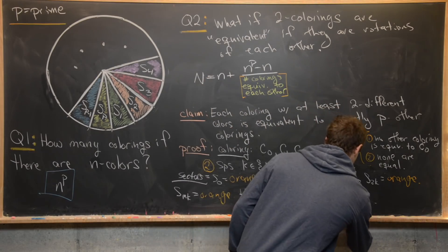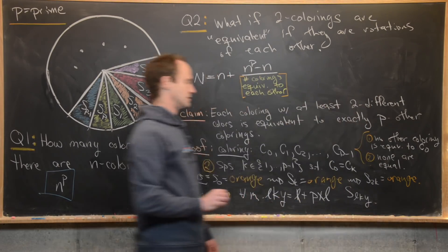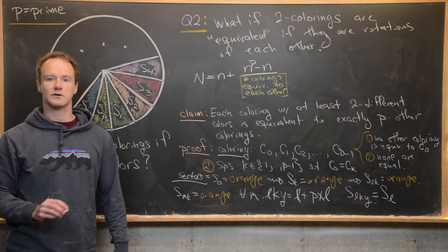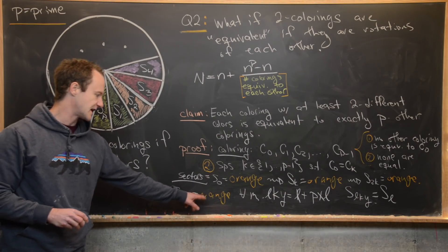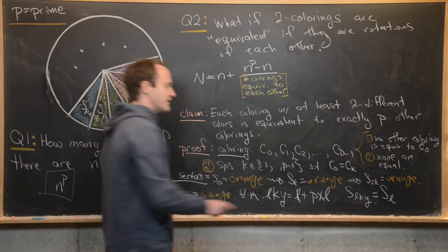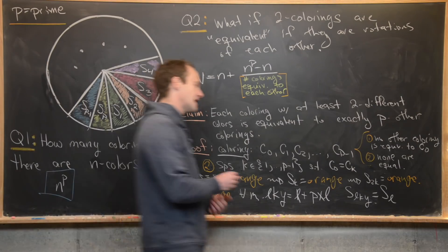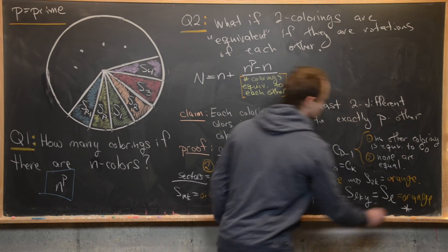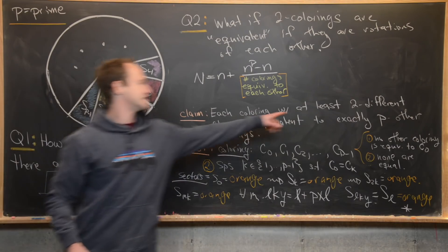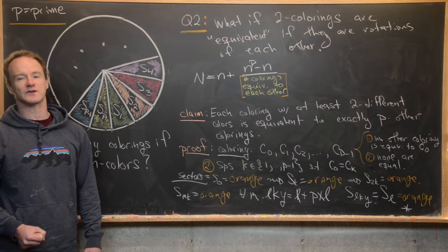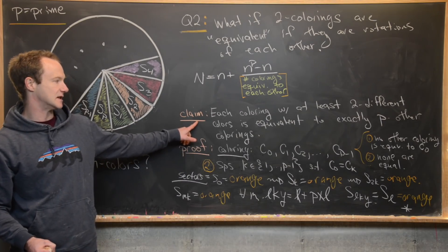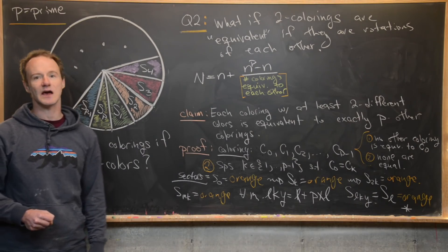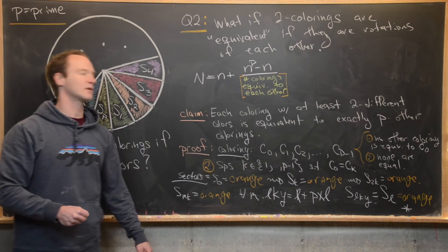Looking at the sectors built from this equation, the sector at position L·K·Y on the circle equals the sector at position L. But we showed that any sector at a multiple of K is orange, and here we've expressed every sector as a multiple of K. That means every sector is orange — a contradiction, since we assumed at least two sectors have different colors. So we've proven the claim.